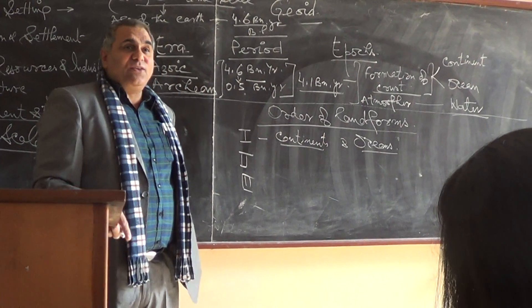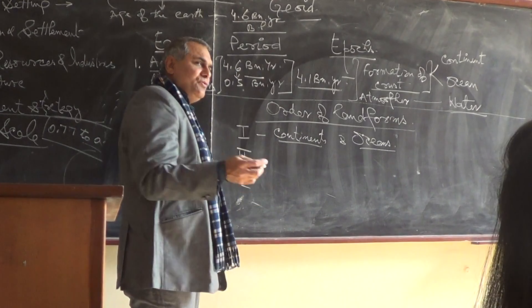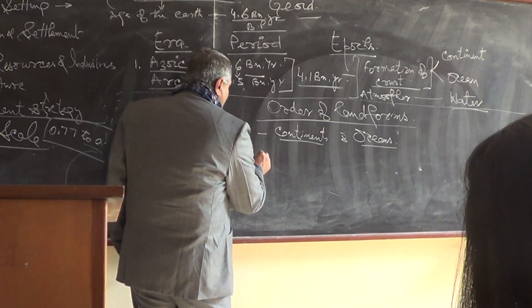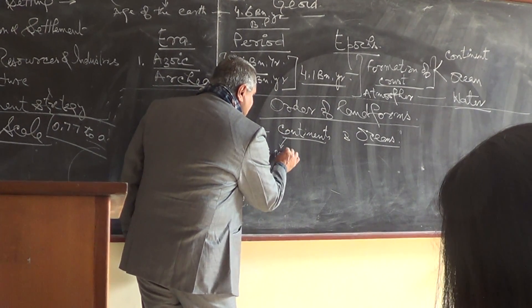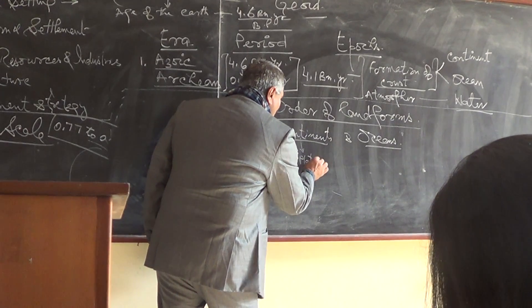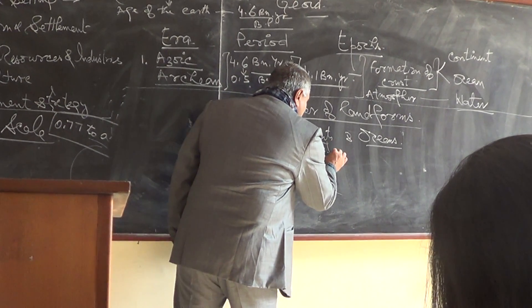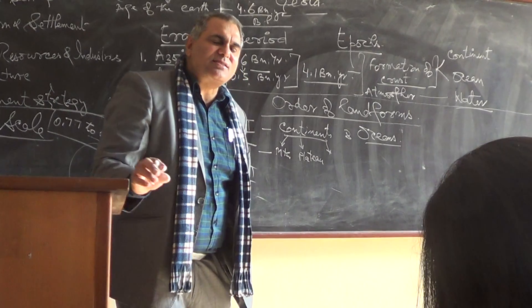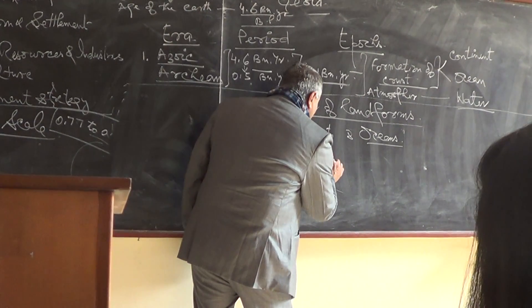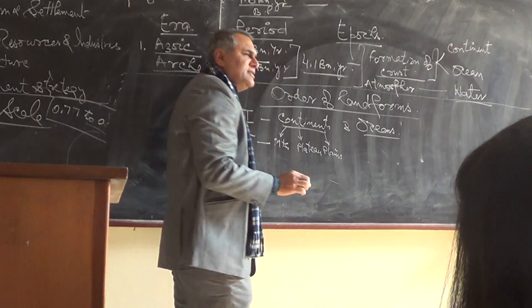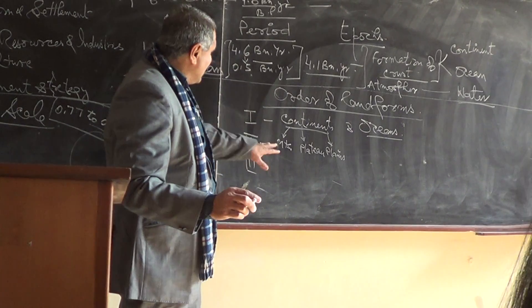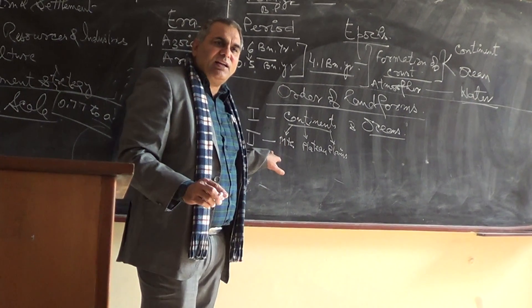Second order of landforms are within continents - what are the relief features? Within continent we have the mountains, we have the plateau, and we have the plains. We will study the mountains of India, plateau of India, and plains of India. All deserts come under the plains. So broadly there are three second order landforms.